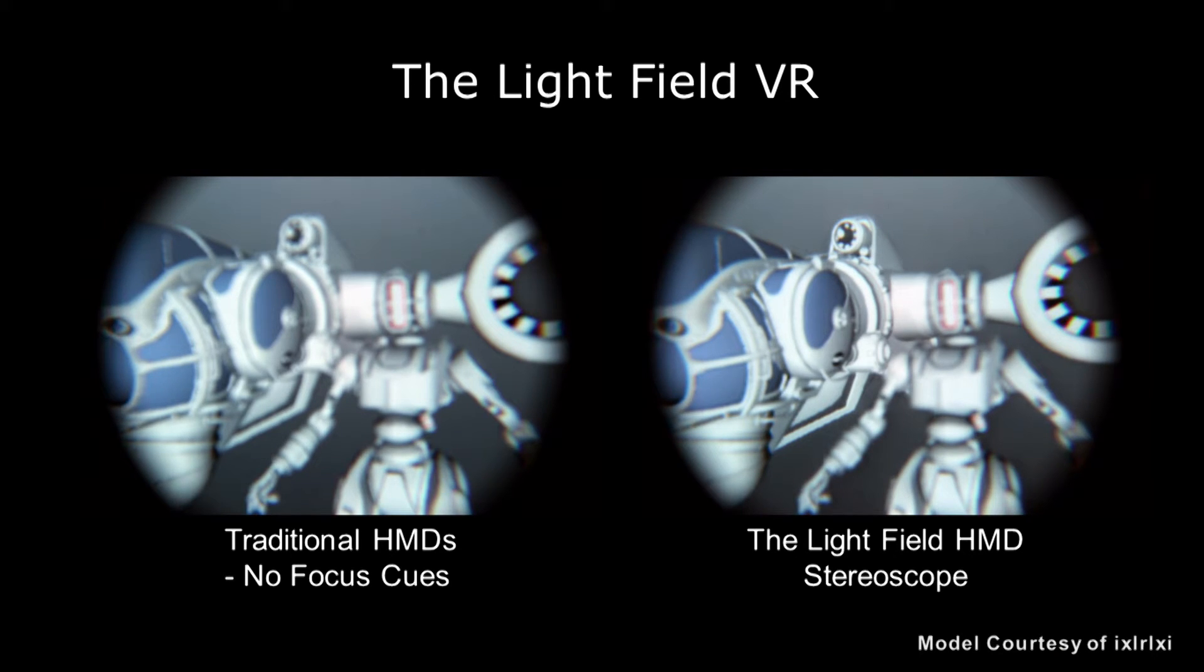But most importantly, on the traditional head-mounted display, there's a common problem called vergence and accommodation conflict, which would cause all kinds of discomfort, eye strain and nausea. And our light field VR head-mount can also solve the problem.